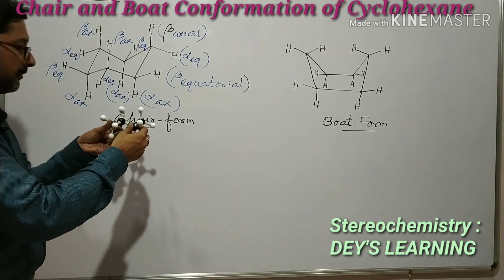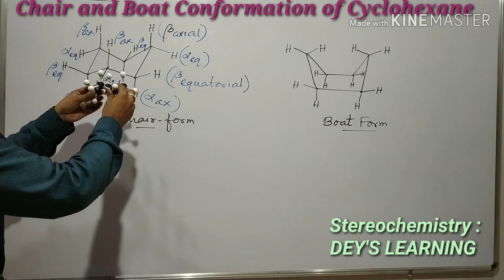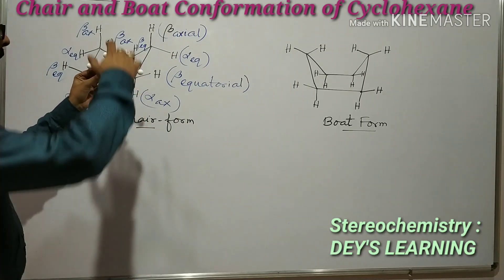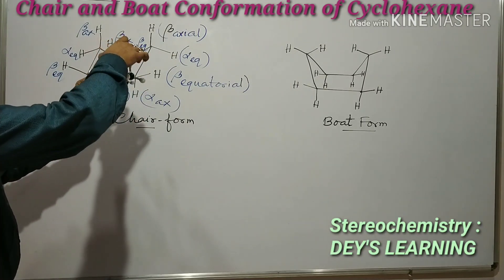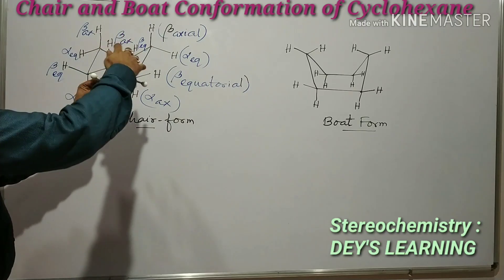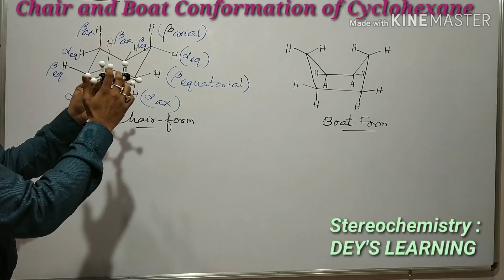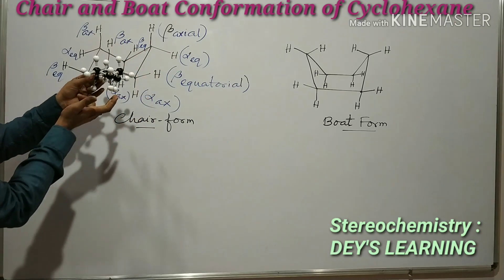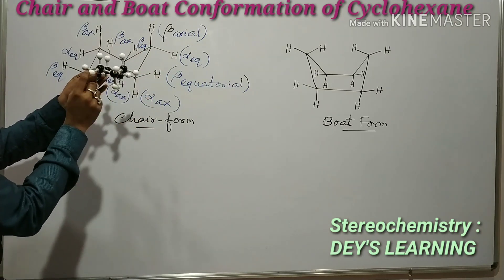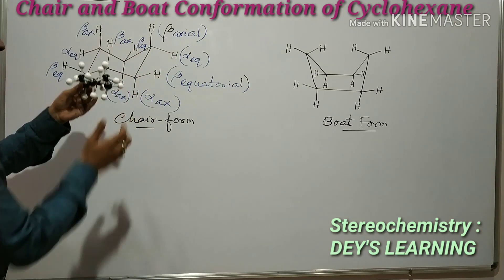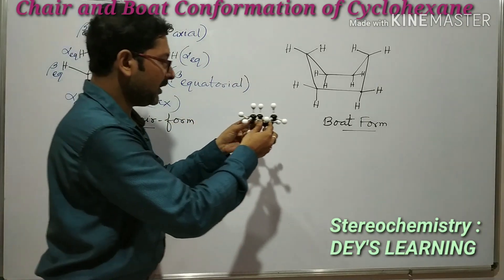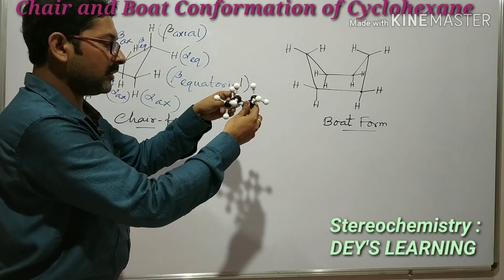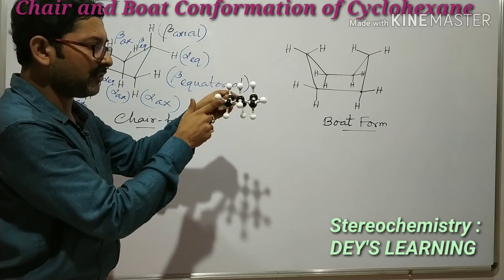What is the difference between these two conformations? In the chair form of cyclohexane there are three beta axial bonds, three beta equatorial bonds, three alpha axial bonds, and three alpha equatorial bonds. Now, what is the boat form?